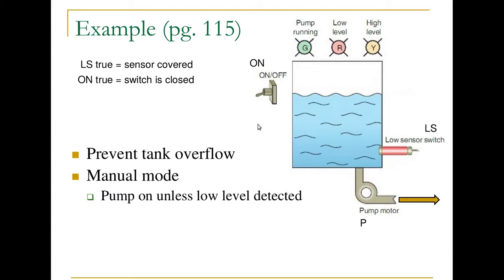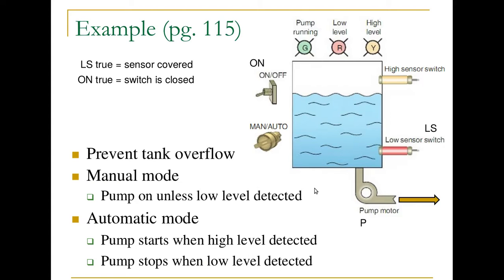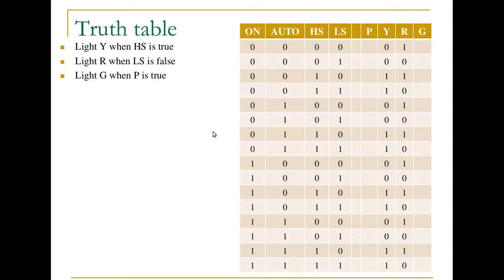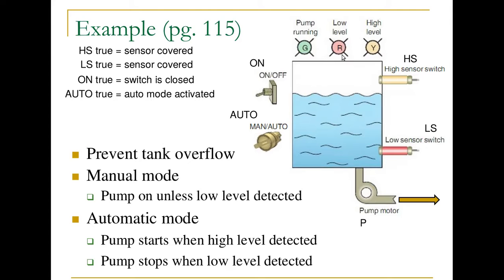We also want an automatic mode. If the switch is on and in automatic mode, the pump will start once the high sensor is covered, and pump all the way down until the low sensor is uncovered, or until it's put in manual mode or turned off. HS is the high sensor, true when covered. We also have an auto/manual switch. There are indicator lights: green means the pump is running, red means the low sensor is uncovered, and yellow means the high sensor is covered.